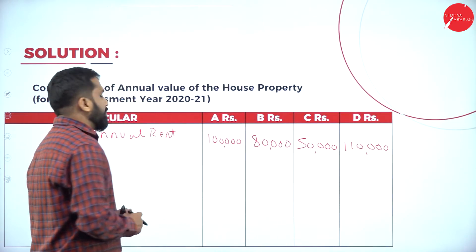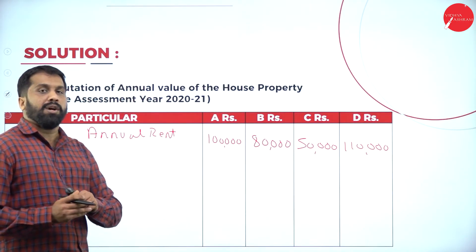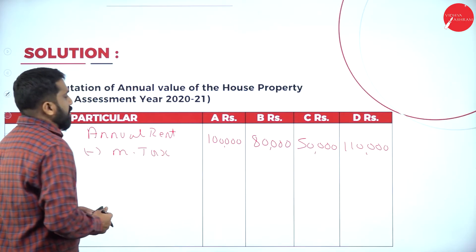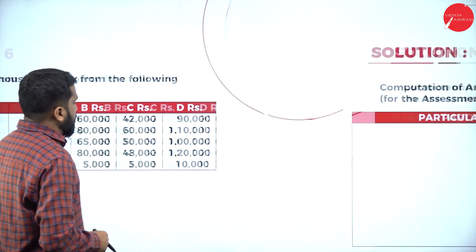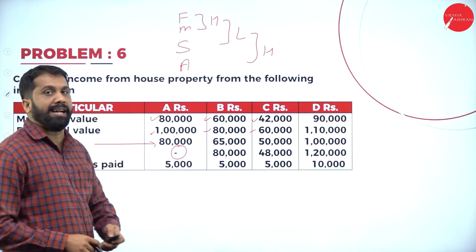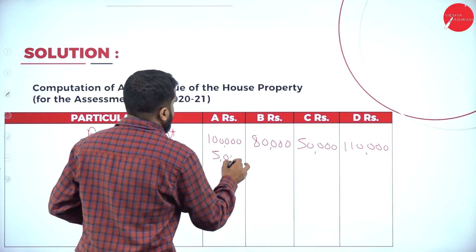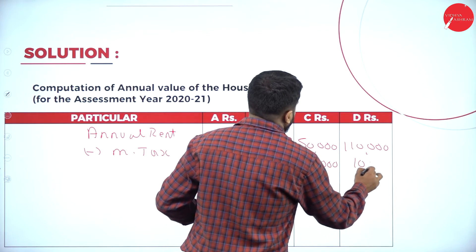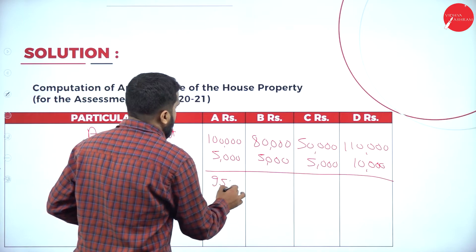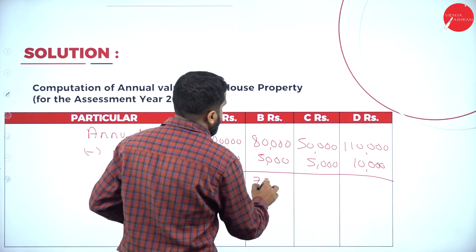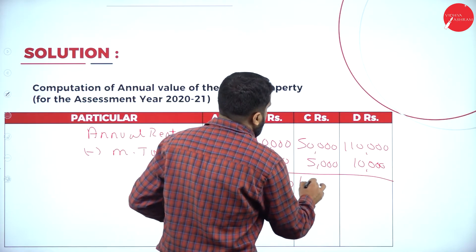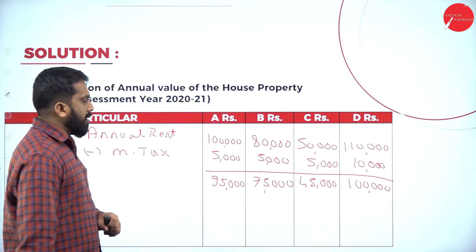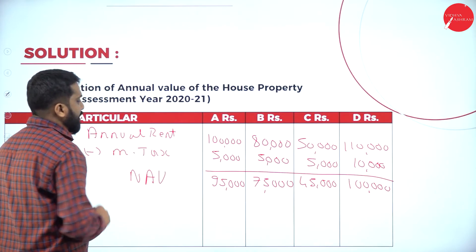Now we have the annual rent. We deduct municipal tax to get net annual value. Municipal tax values are 5,000; 5,000; 5,000; and 10,000. So net annual values are: 95,000; 75,000; 45,000; and 1 lakh.